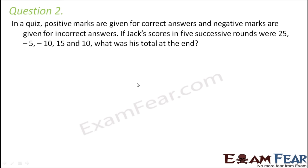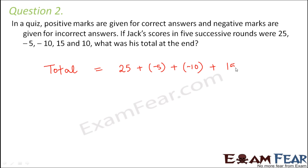Question number 2. In a quiz, positive marks are given for correct answers and negative marks for incorrect answers. If Jack scores in 5 successive rounds: 25, minus 5, minus 10, 15, and 10, what was his total at the end? The total score would be the sum of all 5 rounds: 25 + (−5) + (−10) + 15 + 10.